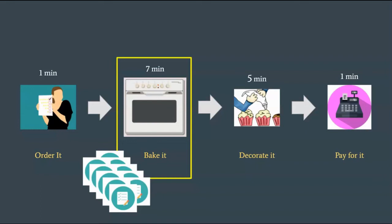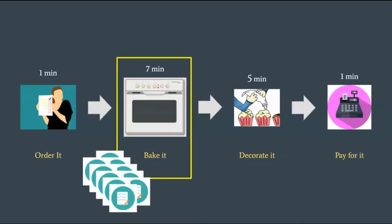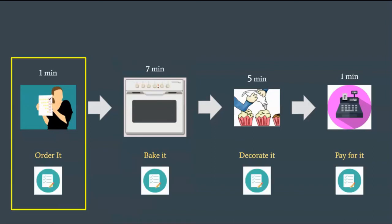Orders will still pile up in front of the constraint. What now? Step number 3 is to subordinate everything to the constraint. Since we know the system can best produce one cake every 7 minutes, the next step is to subordinate everything to that. To eliminate waste, the input of your system should match the rate of your constraint. So in this example, the orders in the bakery should match the orders in your baking step — don't take more than one cake order every 7 minutes. To accept any more orders than that will introduce waste, which we don't like.